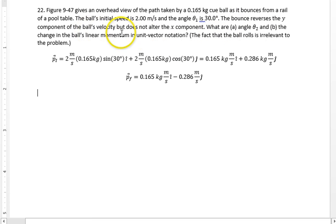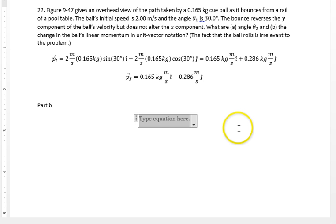Part b: what is the change of cue ball's linear momentum in unit vector notation? So, part b, what is - basically they're asking what is delta p. Alright, and that's just p final minus p initial.